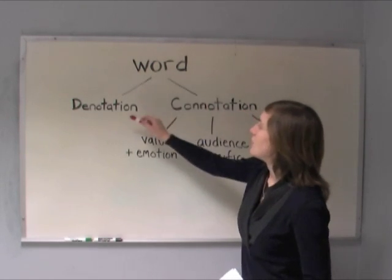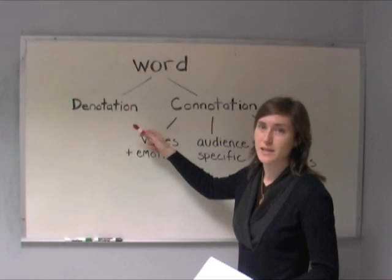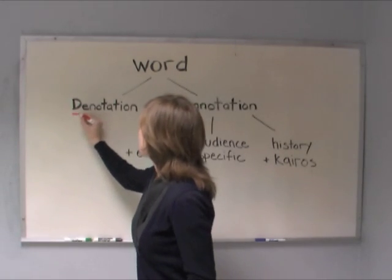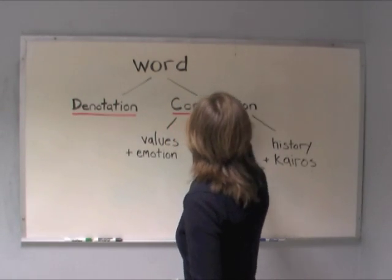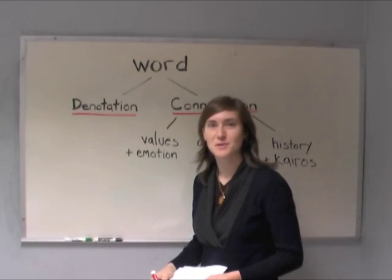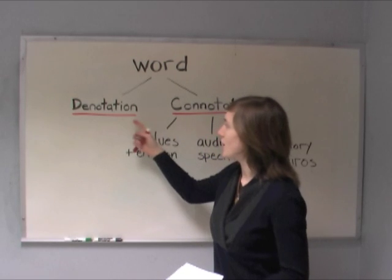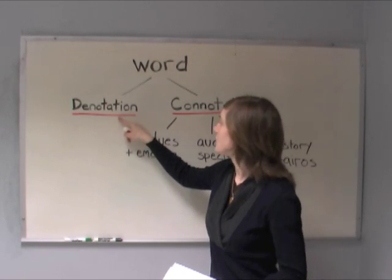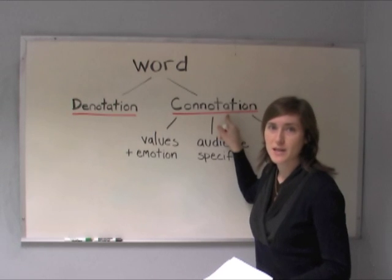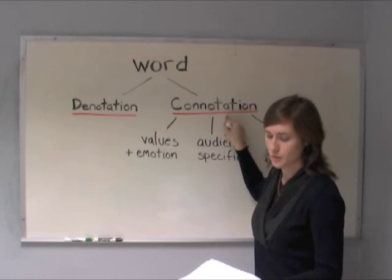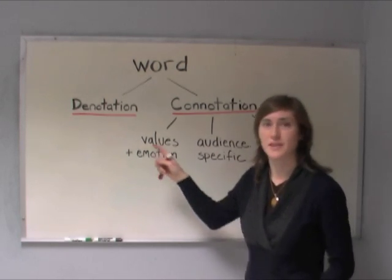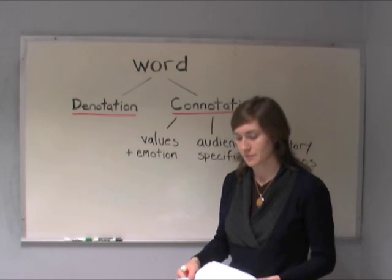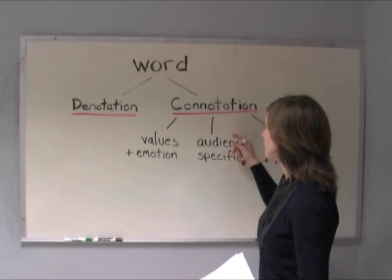Words have meanings, and there are two kinds of meanings: denotation and connotation. What's the difference between denotation and connotation? Well, denotation is the meaning you'll find in a dictionary, and connotation is the meanings that are associated with a word. It's very important to think about both denotation and connotation when you choose your words in your writing, and that's why I'm going to tell you a little bit more about them today.